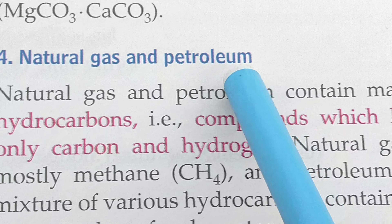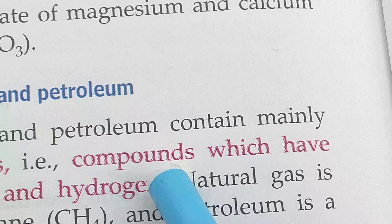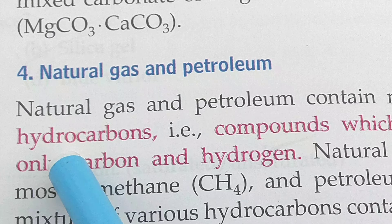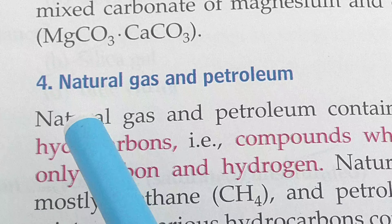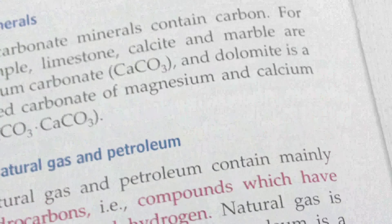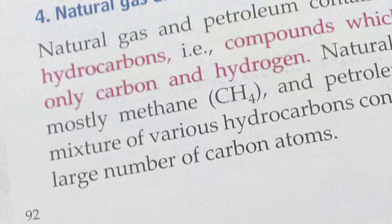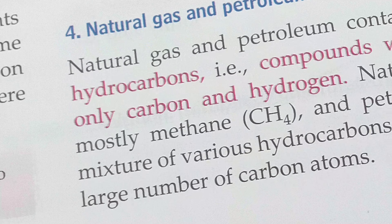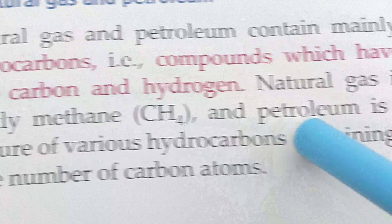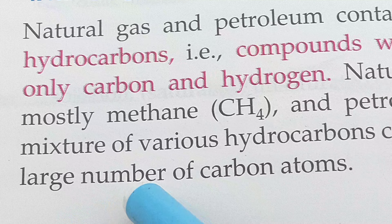Natural gas and petroleum contain mainly hydrocarbons — compounds which have only carbon and hydrogen. Natural gas is mostly methane, and petroleum is a mixture of various hydrocarbons containing a large number of carbon atoms.